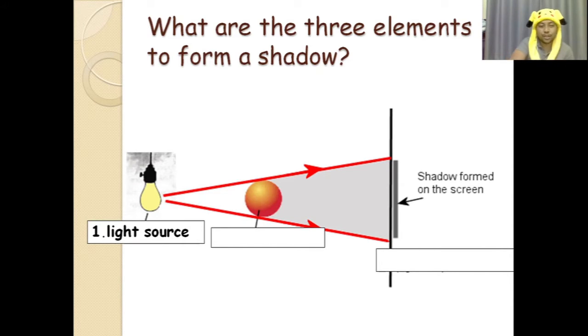Number two: you must have an opaque object. Remember, an opaque object does not allow light to pass through. And lastly, number three: you must have an opaque screen. That's all. I'm sure you will have a shadow if you have these three elements.